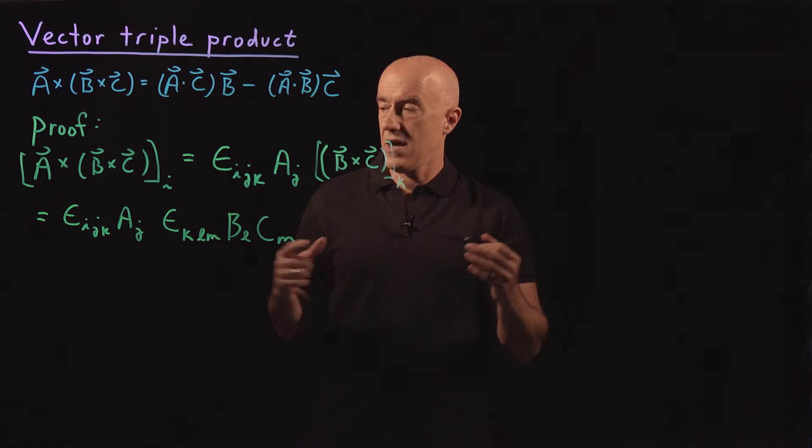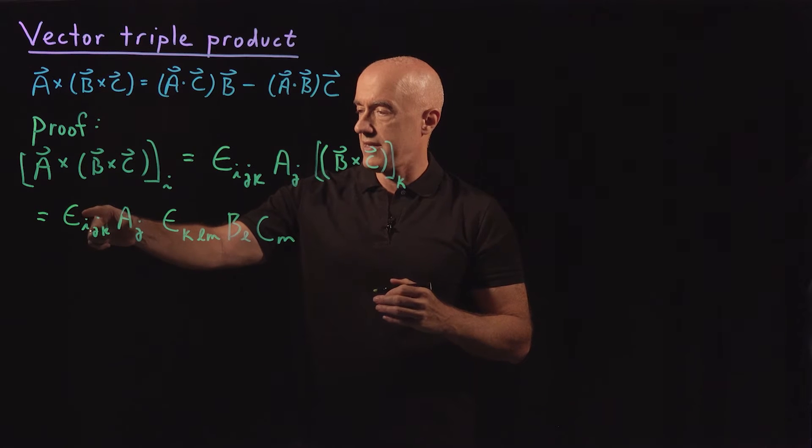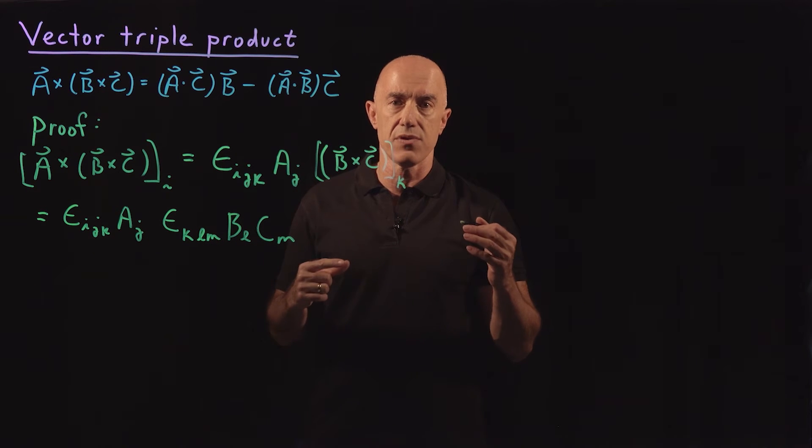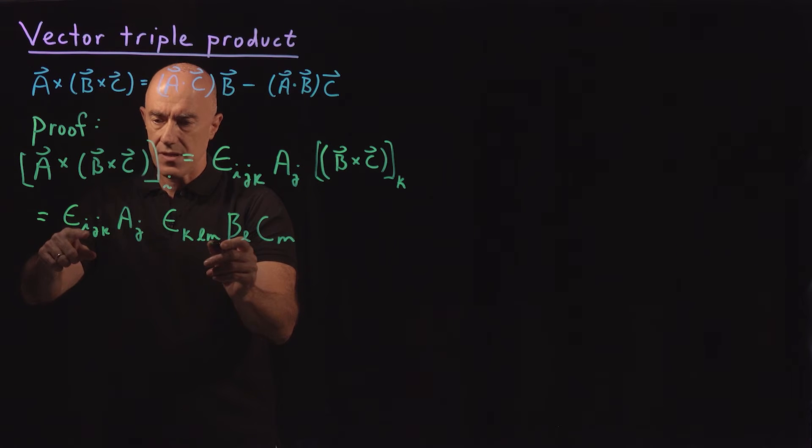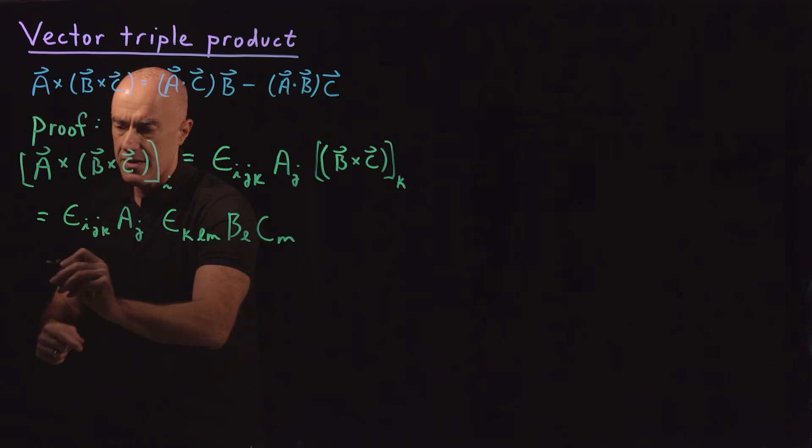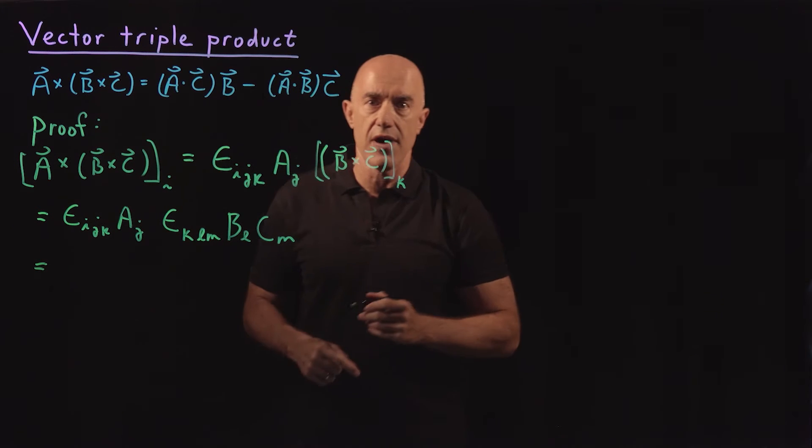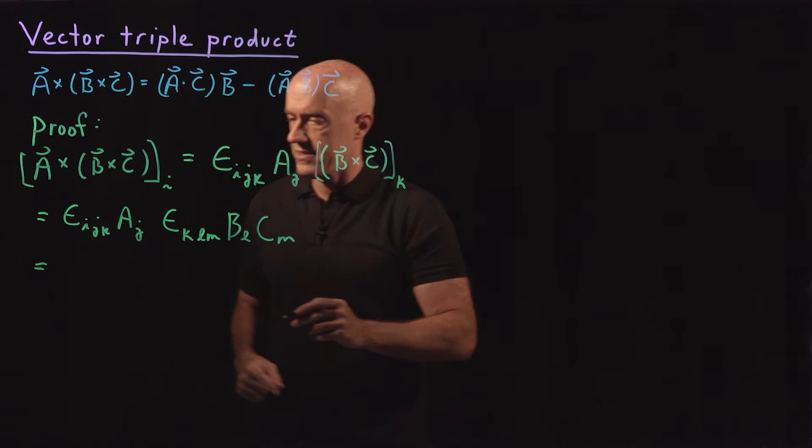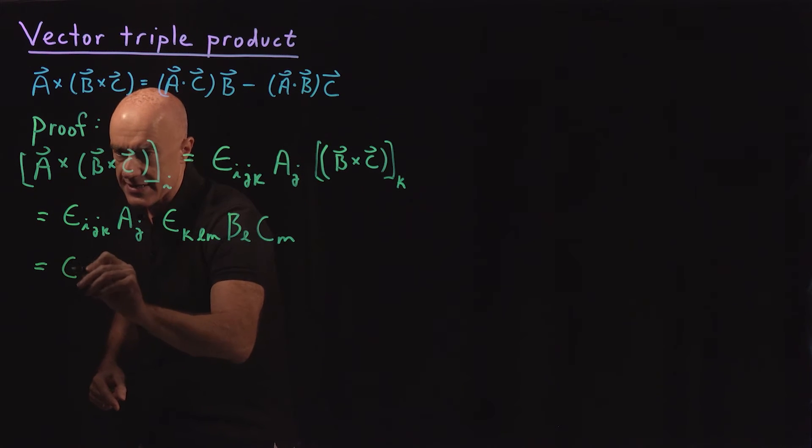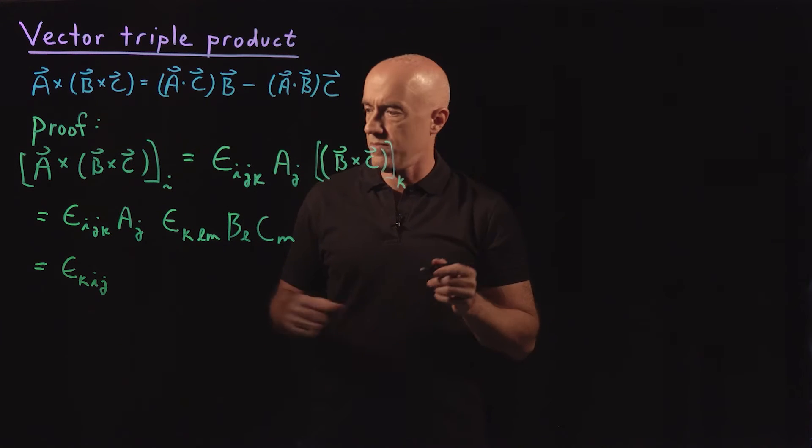The next manipulation I need to do is to put these Levi-Civita symbols together as a product. Here we're summing over k on one of the indices of the Levi-Civita symbol. So I'm going to want to put k as the first index. So I can write this as epsilon_{k,i,j}, using the cyclical property of the Levi-Civita symbol.